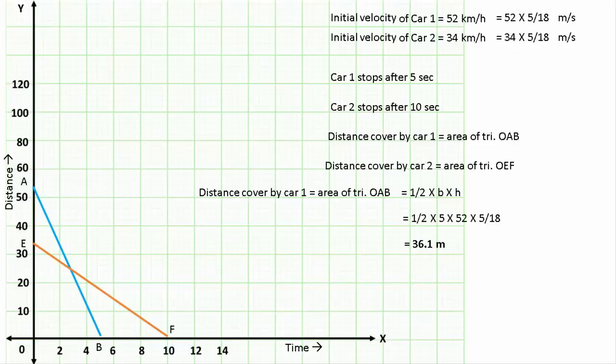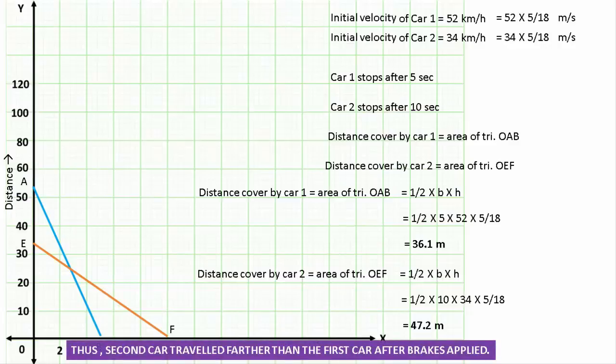The same way we can calculate distance covered by car 2, that is area of triangle OEF. The same way, half times breadth times height. And substituting its value, we will come across 47.2 meters. Hence we can say that the second car traveled farther than the first car after brakes were applied. I hope you understand.